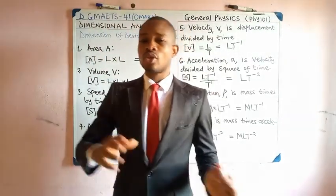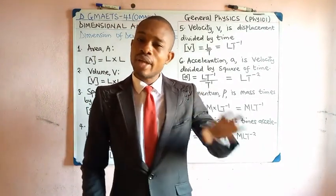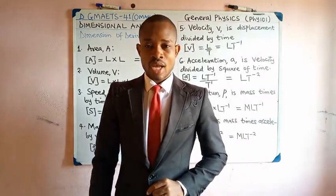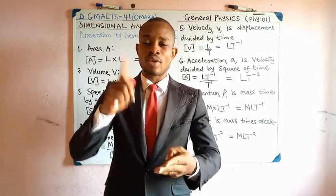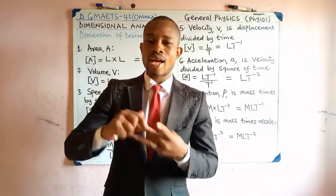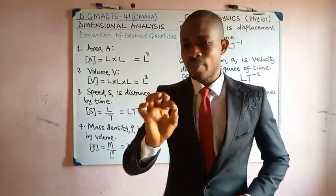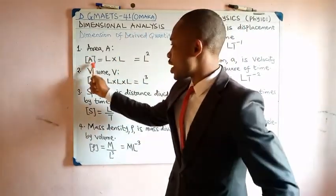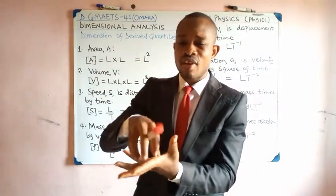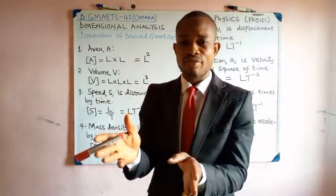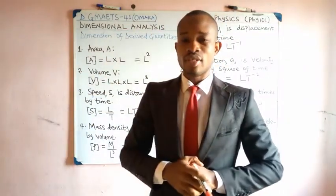In this video, we turn our attention to the dimension of derived quantities. Remember, derived quantities are those that depend on fundamental quantities for their definition. We will focus on L, M, and T. Note that the square bracket symbol means 'dimension' — if you enclose a quantity's symbol in square brackets, it means the dimension of that quantity.